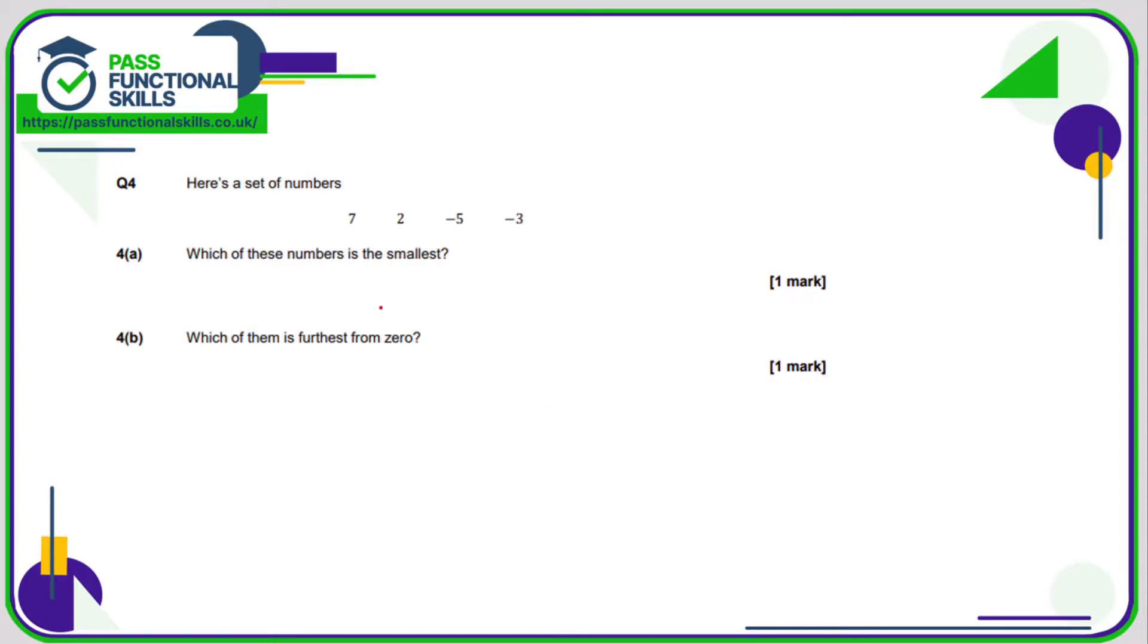Moving on to question four. We've got a set of numbers. Which of these is the smallest? The problem here is we've got some negative numbers. So what is smaller: minus five or minus three? Hopefully we're aware that the negative numbers will be smaller than the positive numbers. Now if you're struggling with this, do a number line.